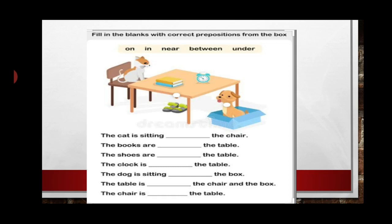The cat is sitting on the chair. The books are on the table. The shoes are under the table. The clock is on the table. The dog is sitting in the box. The table is between the chair and the box. The chair is near the table.